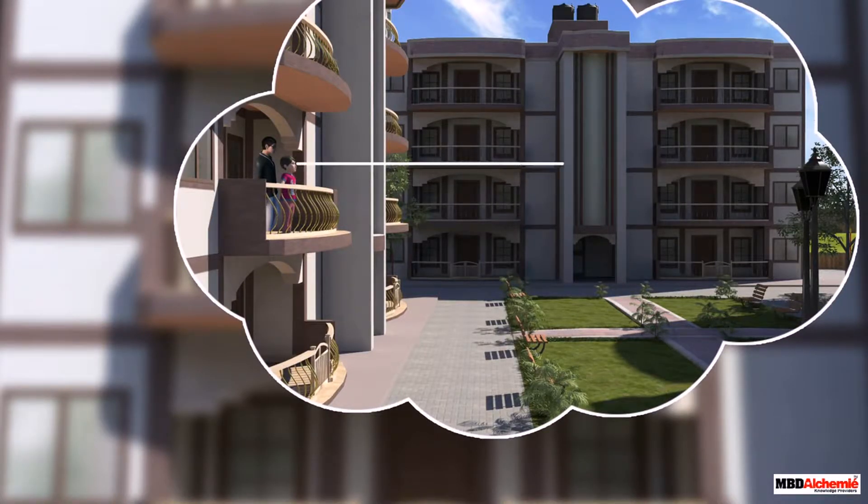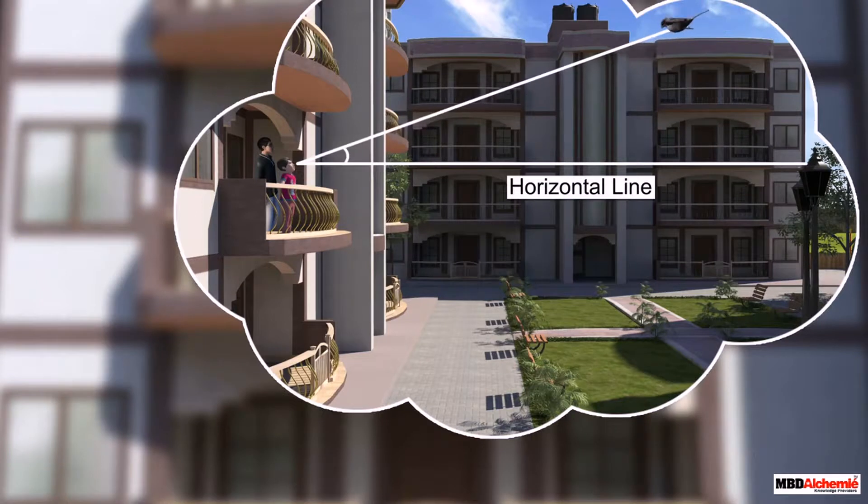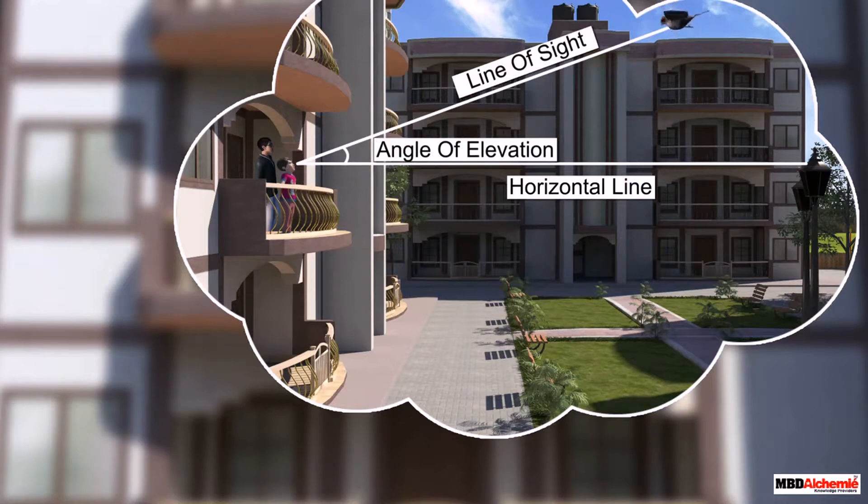The line of the sight parallel to the ground is called the horizontal line. If I look up, then the angle made by the horizontal line and the line of sight is called the angle of elevation.